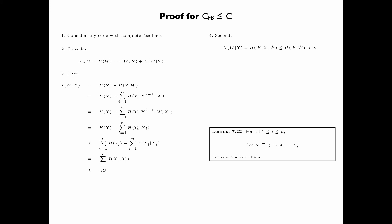Now, for the second term on the right-hand side in step two, we have H(W|Y) equals H(W|Y,W_hat). This is valid because W_hat, which is the estimated message, is a function of the received sequence Y. By removing the sequence Y from the conditioning, we obtain the upper bound H(W|W_hat), because conditioning can only reduce entropy. Now, H(W|W_hat) is very close to zero for reliable communication.